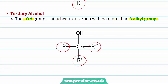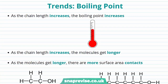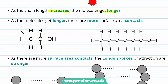Now we've had a look at primary, secondary, and tertiary alcohols. Let's take a look at some of the trends we observe within our alcohols. Earlier in this video, we looked at the trend in the boiling points of our alcohols, and we saw that as the chain length increases, the boiling point increases too. This is because as the chain length increases, the molecules get longer, and as the molecules get longer, there is more surface area contact. If we compare our molecule of ethanol with two carbon atoms to hexanol...